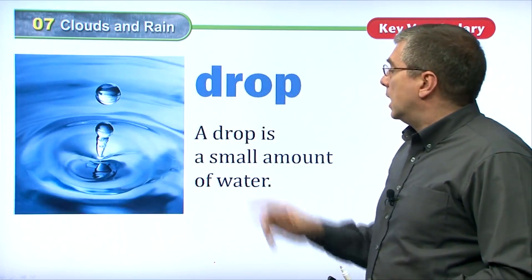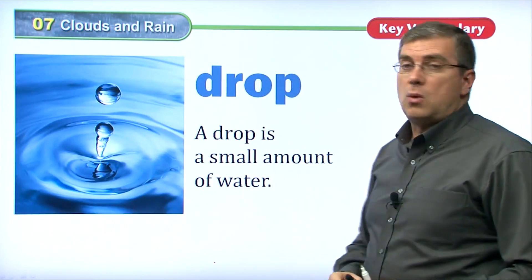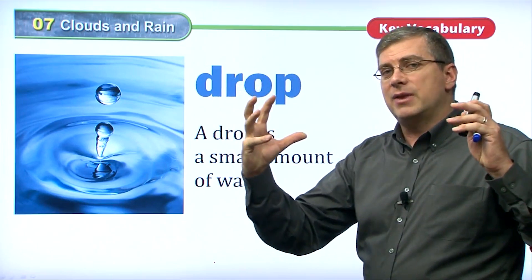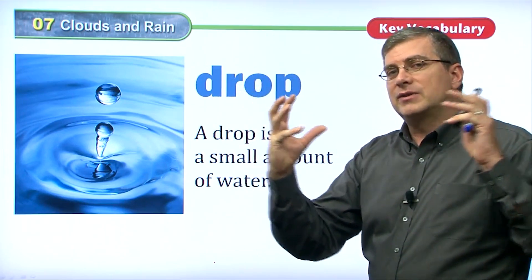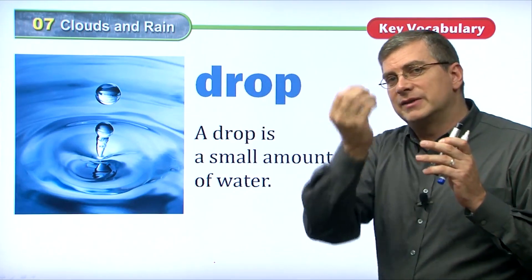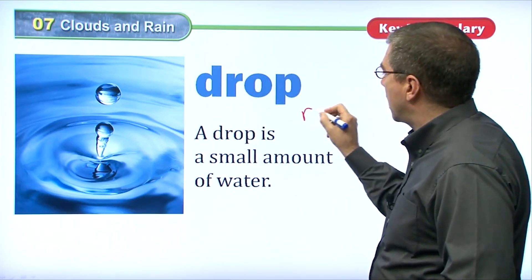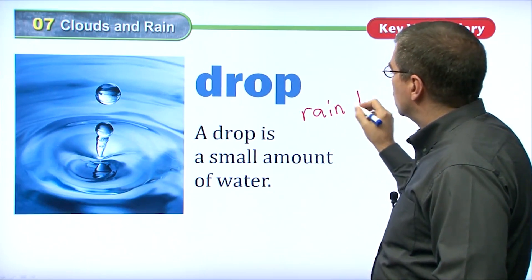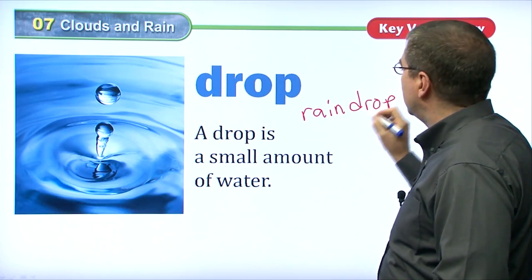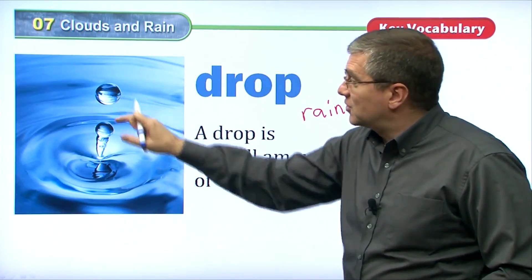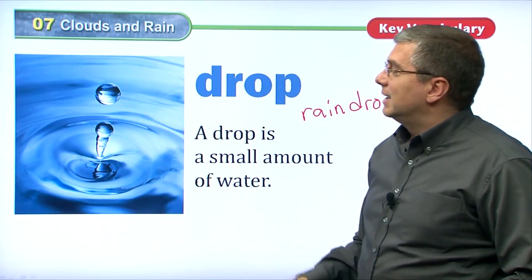A drop is a small amount of water. A very small amount of water. Of course, when those clouds get together, if the water in those clouds get together a lot, they become heavier, and they fall as single drops. So of course, we have the word raindrop. So a drop of rain is a raindrop. And you can see a very good picture. This is a small amount of water. It's a drop. It's a drop of water.